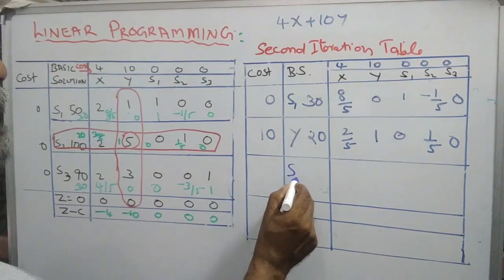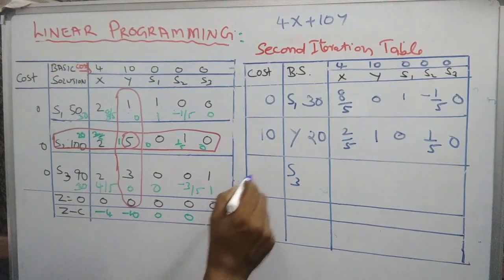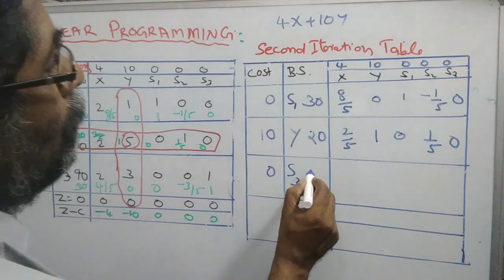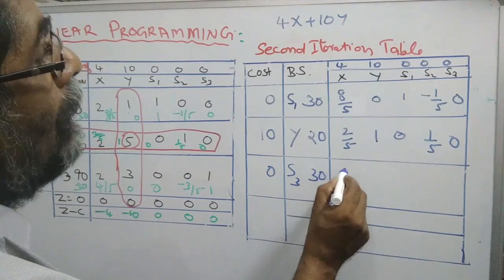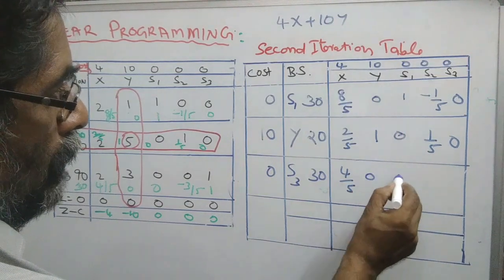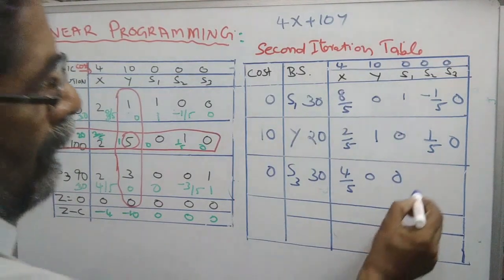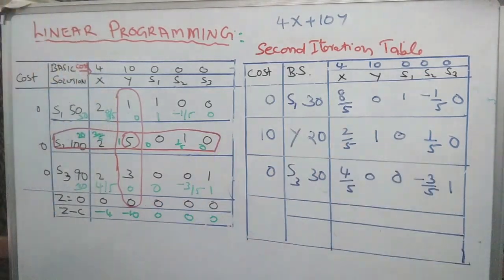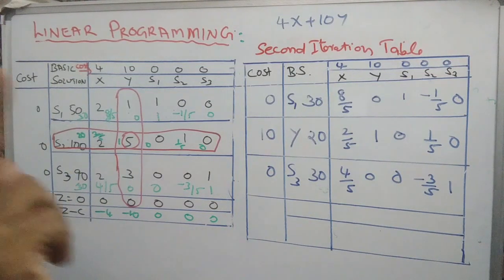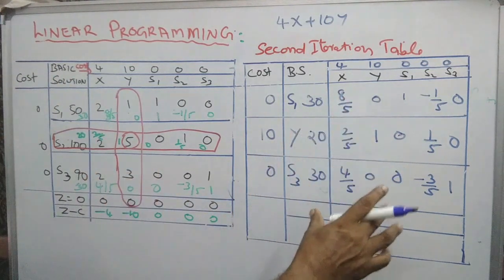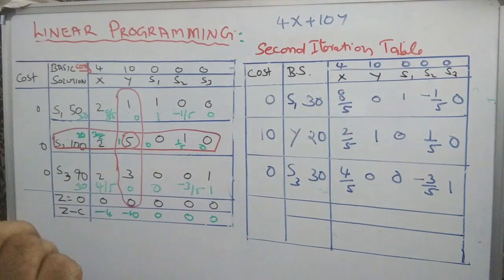The third row is S3 itself; its cost is 0. Here its value was 90, now it is changed to 30. The next elements are 4 by 5, 0, 0, then minus 3 by 5, 1. That is the second iteration table. We have the first iteration table with us, and we can use it for computation — the values are now filtered and presented as second iteration values.